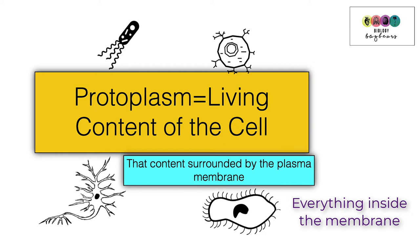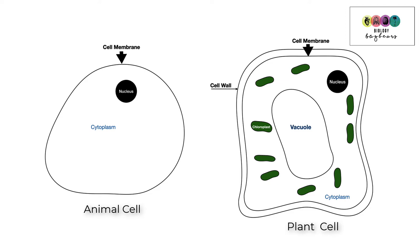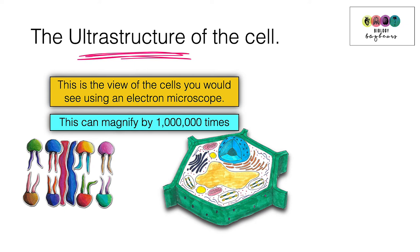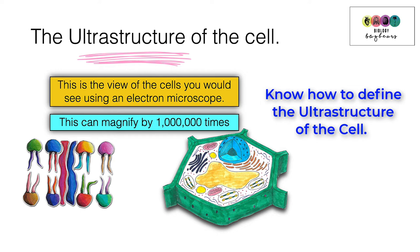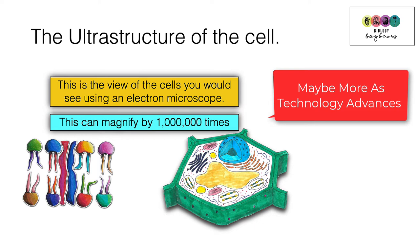These are the two classic pictures of the animal cell and the plant cell as viewed under a light microscope. When the cell is viewed using an electron microscope, you get a very detailed picture — this is the ultra structure of the cell, defined as the view of the cell you would see using an electron microscope.